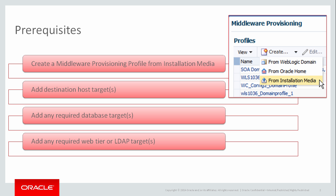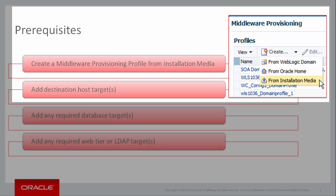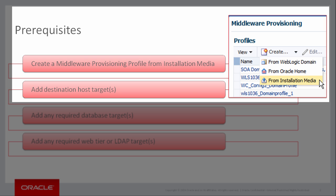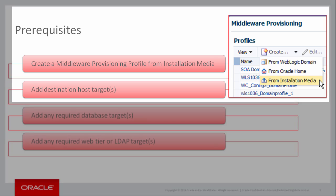This demonstration assumes that the required installation media — in this example, the media for Oracle SOA Suite — has already been downloaded from Oracle, uploaded to the Enterprise Manager software library, and exposed as a media-based provisioning profile.